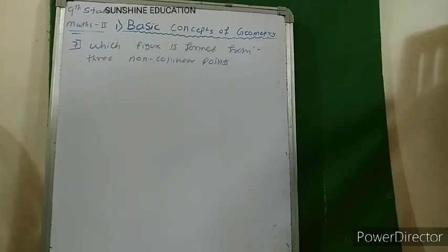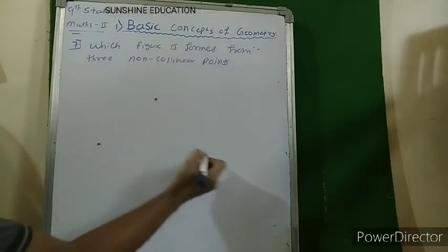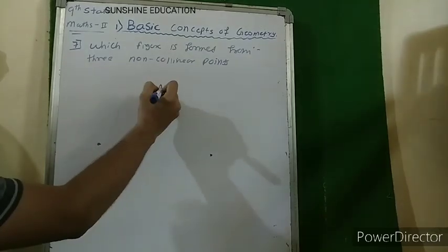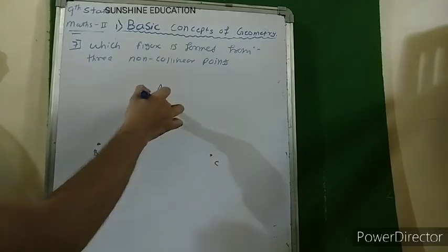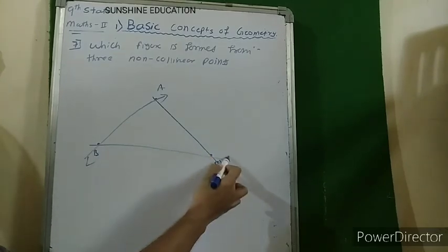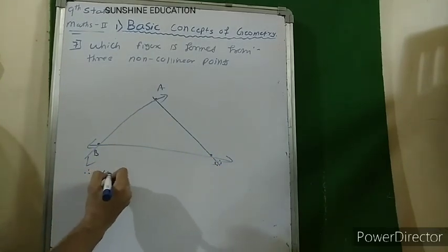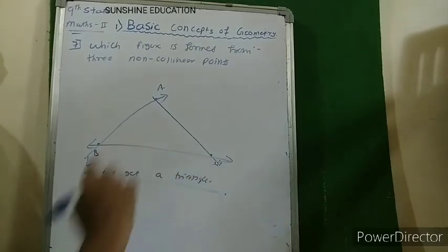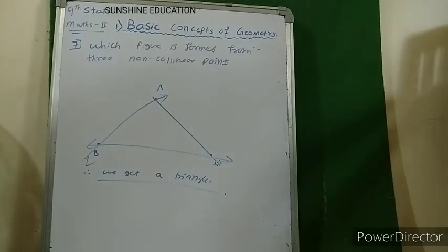Question 7, the last part of Practice Set 1.1: which figure is formed from three non-collinear points? Three non-collinear points do not lie on the same line. When we join points A, B and C with lines, we get a triangle. This concludes Practice Set 1.1. In the next lecture we will look at Practice Set 1.2.